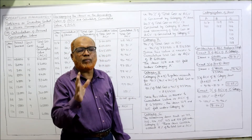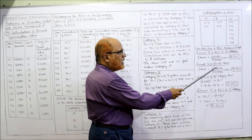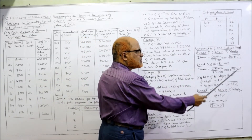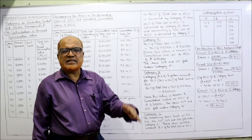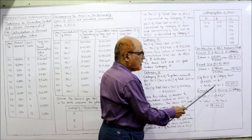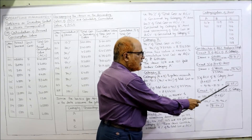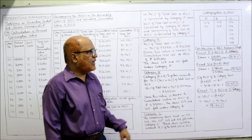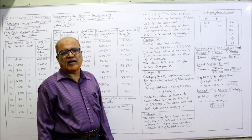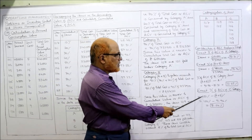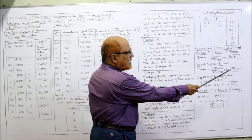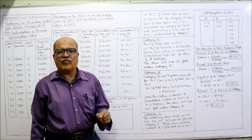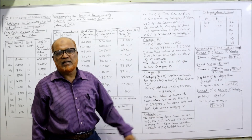For B category only: from the total of A and B we subtract A items. A + B is 91.96%. A category is 81.31%. So 91.96% − 81.31% = 10.65% of the total value is in B category. For C category: 100% − 91.96% = 8.04% of the total inventory value falls in C category.